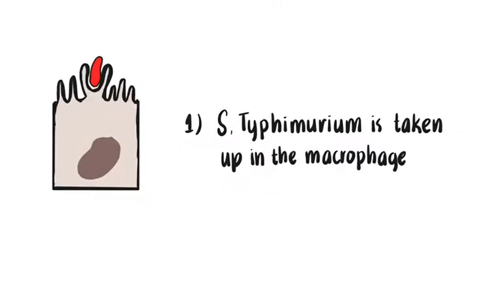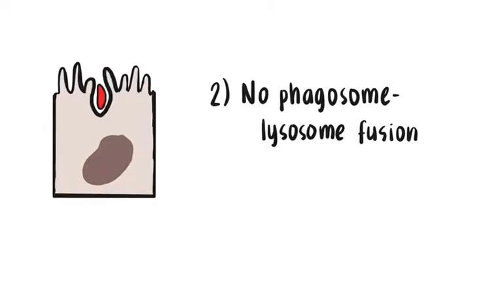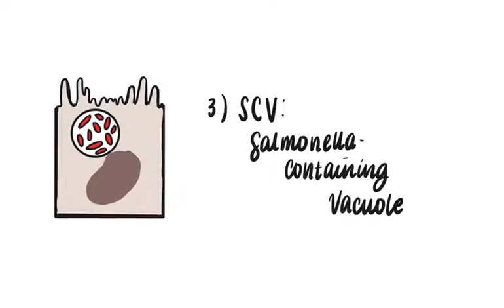they modify the phagosome into a specialist vacuole called SCV, or Salmonella-containing vacuole. By doing this, they escape the phagolysosomal pathway and can replicate within the SCV.